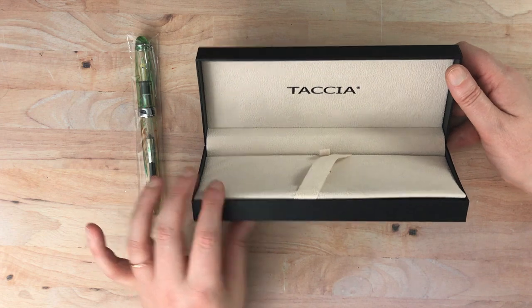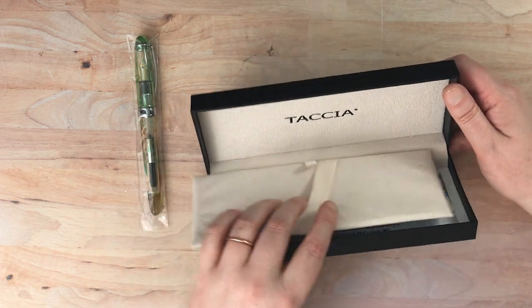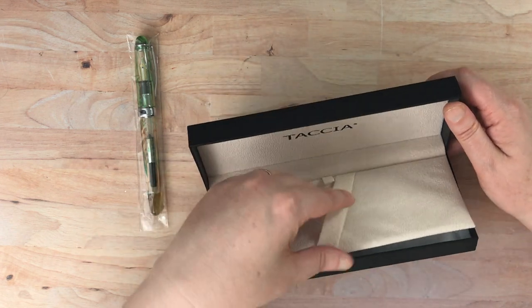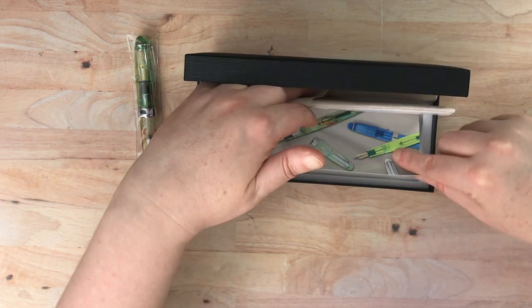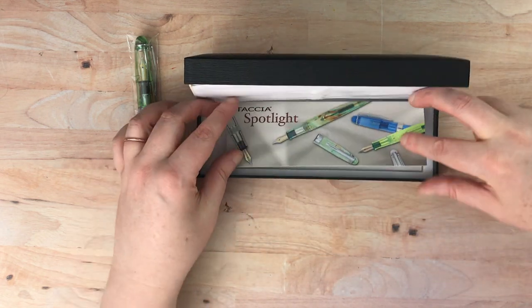So here's the inside of the box. It's actually really pretty. It's got this nice cushiony box. Underneath we have some cartridges and some information about the company.